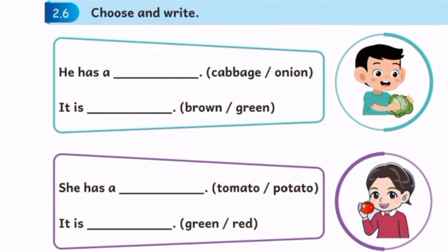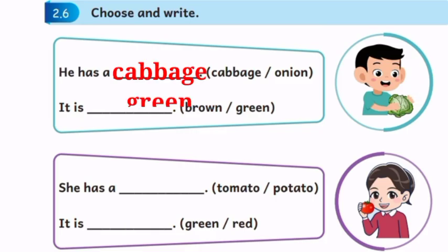Exercise 2.6: Choose and write. He has a — see the picture. What does he have in his hand? It's a cabbage. So write cabbage. He has a cabbage. It is green. See the next picture and write: She has a tomato. It is red.